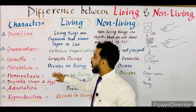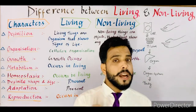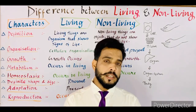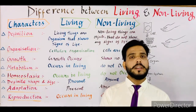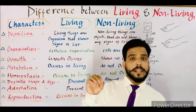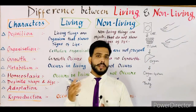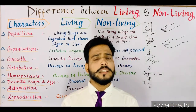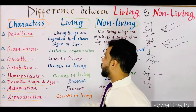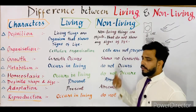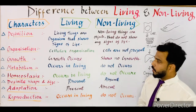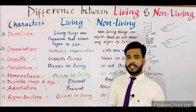The next point is metabolism. All the chemical reactions that take place in our body are collectively known as metabolism. In other words, the sum of different chemical reactions taking place inside a living organism's body is known as metabolism. It is further divided into anabolism and catabolism. These metabolic activities occur only in living organisms and do not occur in non-living things.